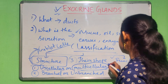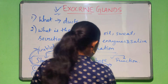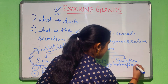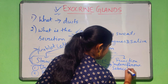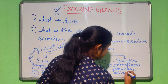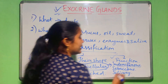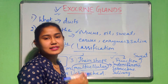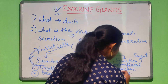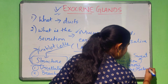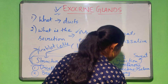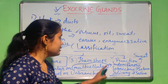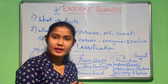Considering the multicellular glands, these are made up of many cells. Examples are sudoriferous glands, sebaceous glands, and salivary glands. Sudoriferous glands secrete sweat — they are also called sweat glands. Sebaceous glands secrete sebum, or oil. And salivary glands secrete saliva. This is all about unicellular and multicellular exocrine glands.